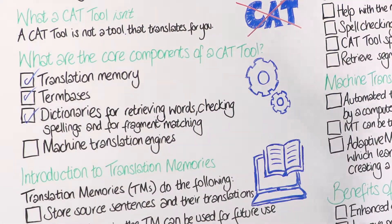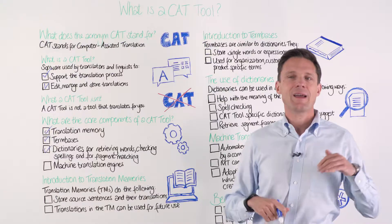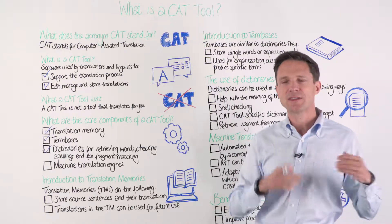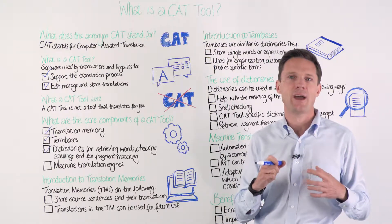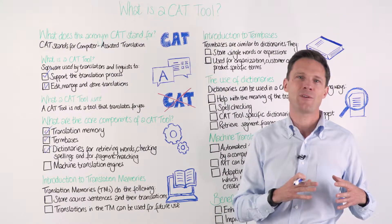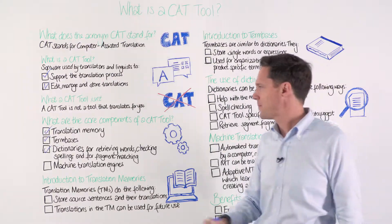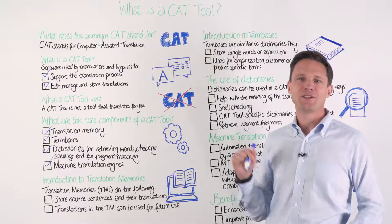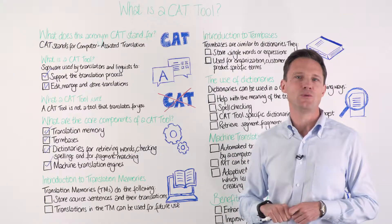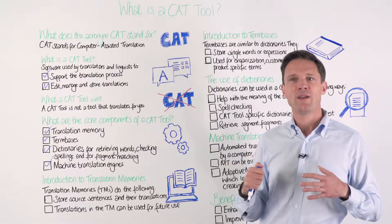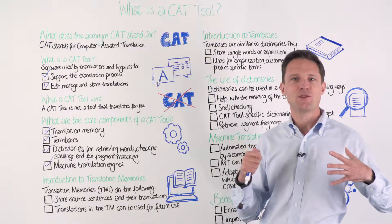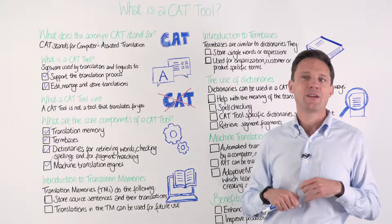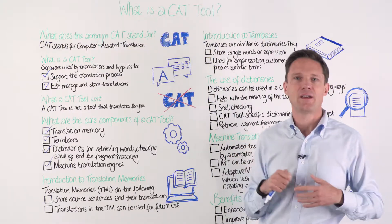There are also lots of other dictionaries that can help you retrieve words and check what you've done before. So there's a lot of other help that you get apart from the translation memory and a term base. And there is actually machine translation as part of a CAT tool typically, so not only your translation, but with the help of machine translation, if you want to, you can translate in a different way.